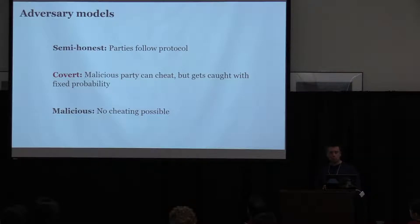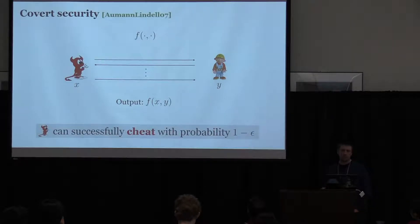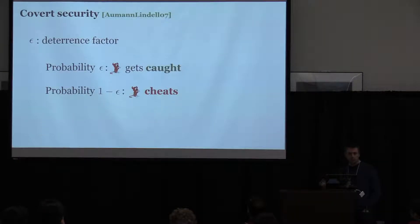But that's kind of expensive. So people looked at a covert model that was proposed by Auman Lindell in 2007. And that model kind of gives a very nice trade-off, I think, in the sense that a malicious party can cheat and in fact can succeed in cheating, but gets caught with a fixed probability. And then you can argue that depending on your utility function, what you want to achieve with the secure computation, that a lot of the time you don't want to do it. And rational players will not do that. Okay, so in pictures, that's kind of the same as the protocol that players run. And we say that there is a deterrence factor that cheating Alice, if she's cheating, she's going to get caught with some probability epsilon. Epsilon is non-negligible here.